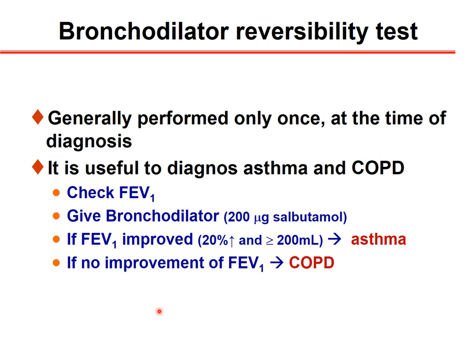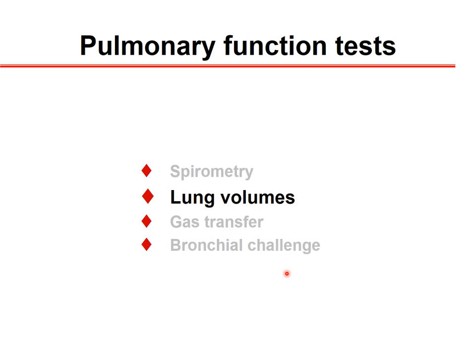The bronchodilatory reversibility test is used to differentiate between asthma and COPD. First we measure FEV1, then after using a bronchodilator such as salbutamol, we look at FEV1 again. If it improves by 12% or 200 ml, the diagnosis is asthma. If no improvement occurs, that is chronic obstructive pulmonary disease — the irreversible form.